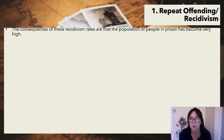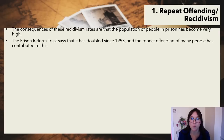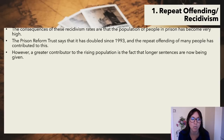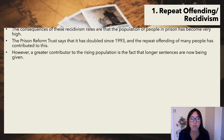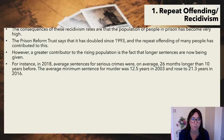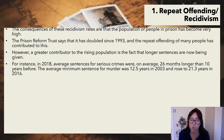The consequences of these recidivism rates are that the prison population has become very high. The Prison Reform Trust says it has doubled since 1993, with repeat offending contributing to this. However, a greater contributor to the rising population is that longer sentences are now being given. In 2018, the average sentence for a serious crime was 26 months longer than ten years before. The average minimum sentence for murder was 12.5 years in 2003, rising to 21.3 years in 2016.